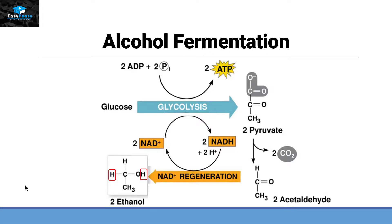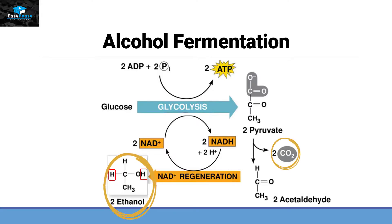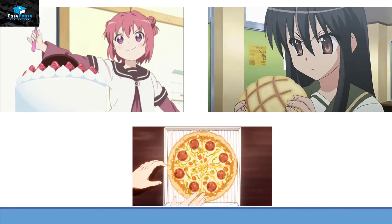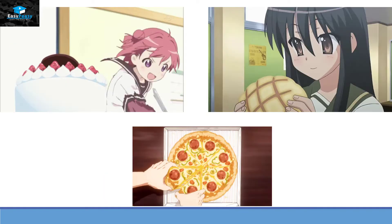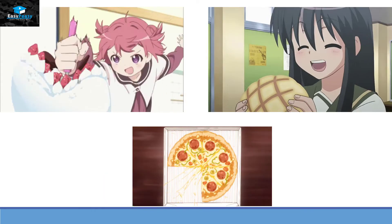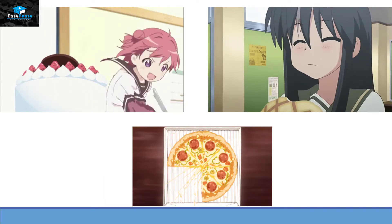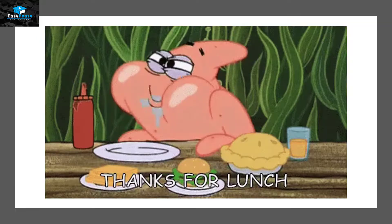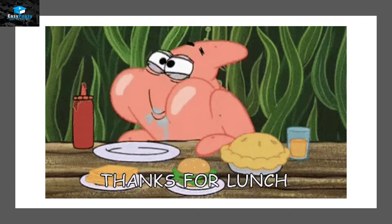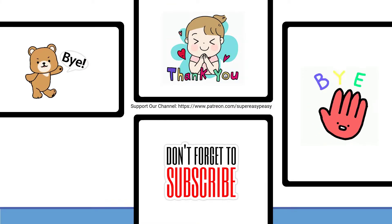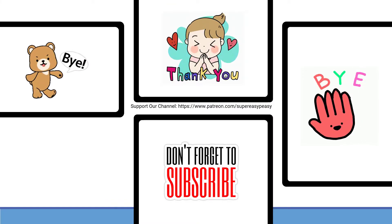By this process, these two useful products — ethanol and carbon dioxide — are produced, and we use them to make many different types of products in our daily lives. So have a good day and bye for now.